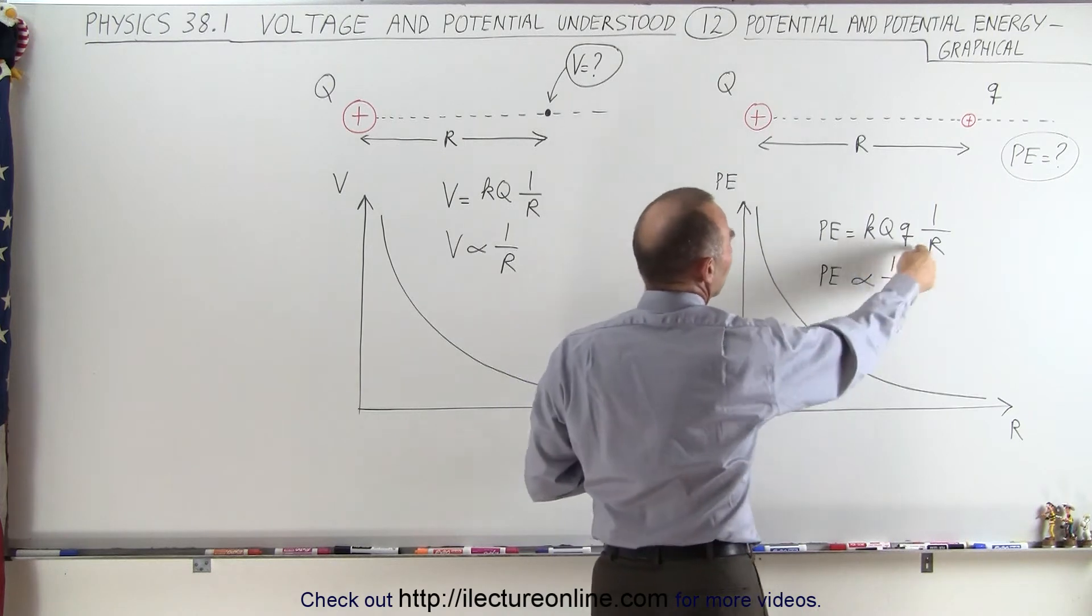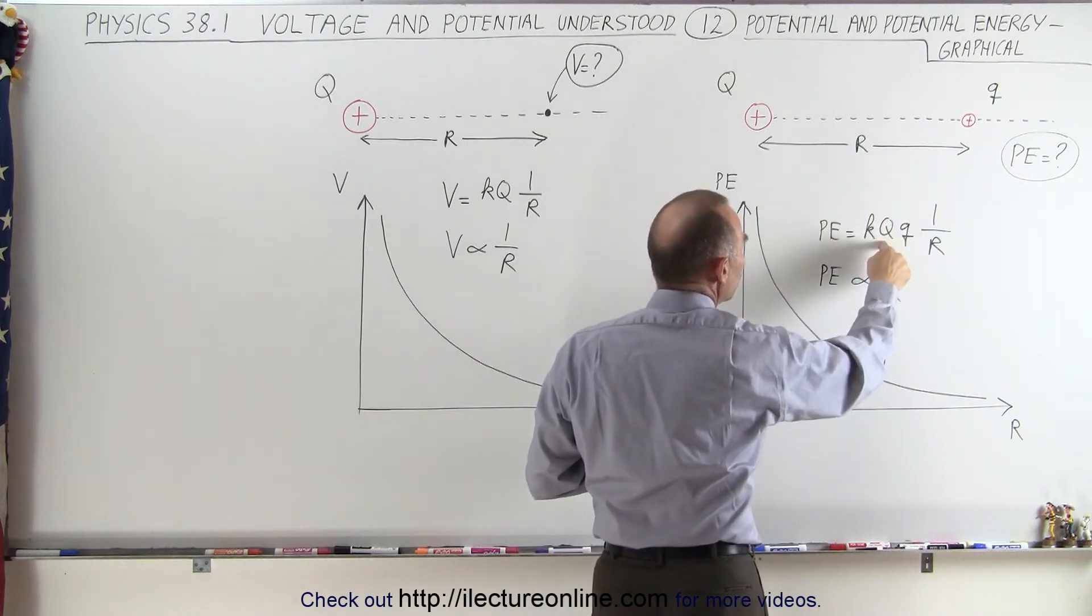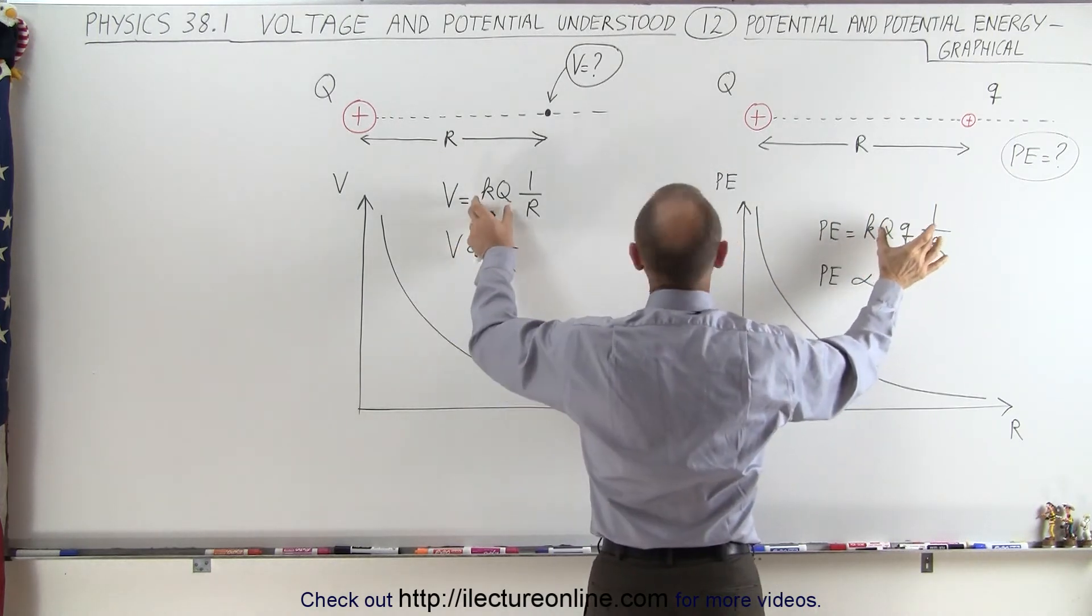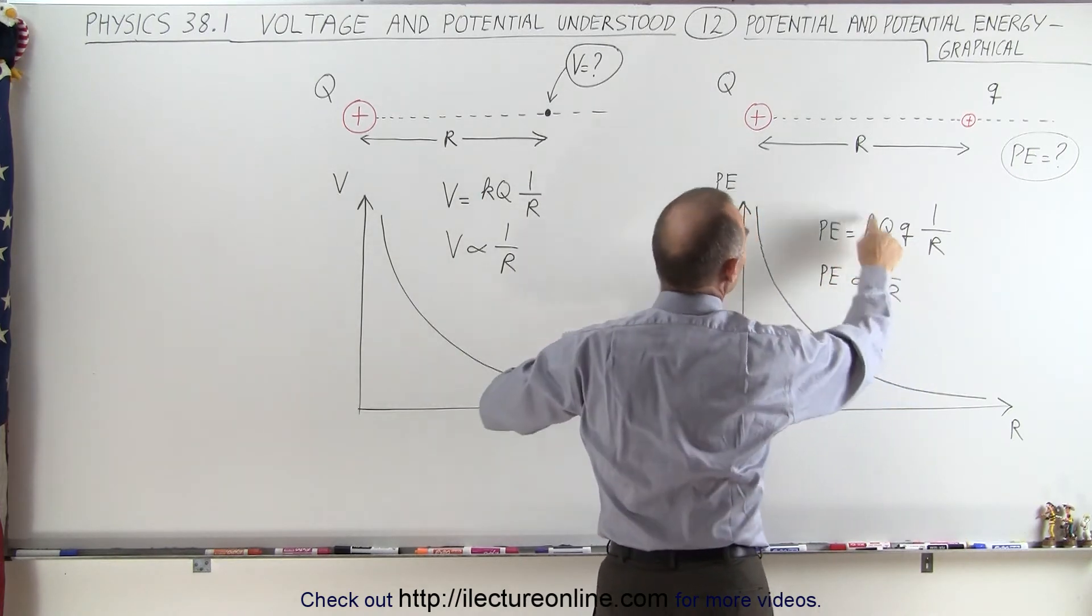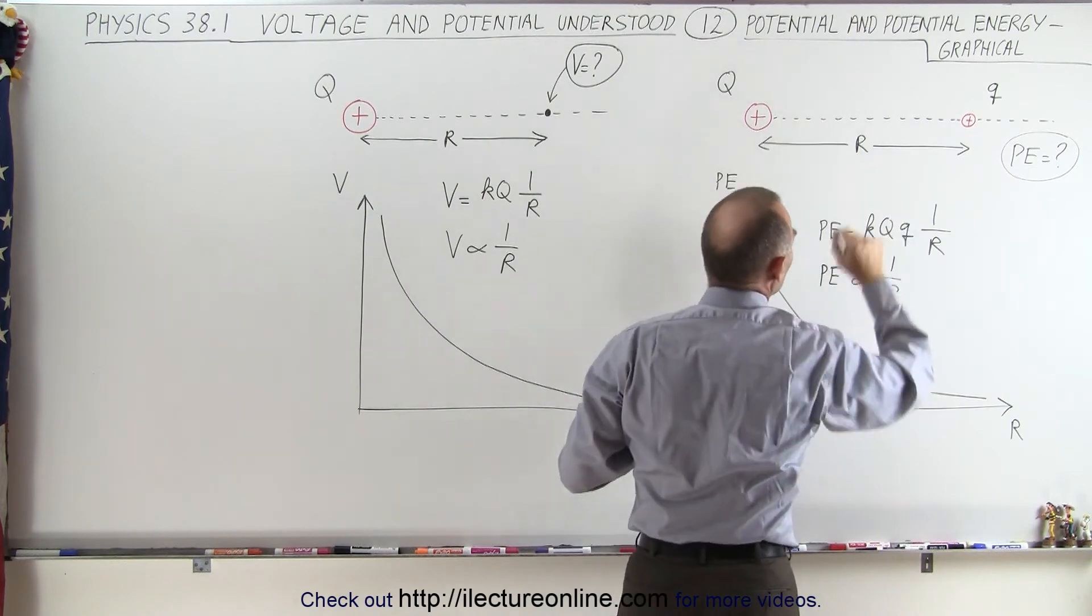The only difference is that we have a constant, KQq. It's a different constant than we had over here, and so the height of that graph will depend upon the size of big Q and the size of little q.